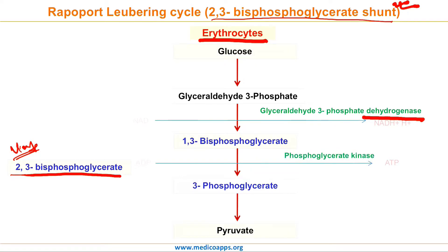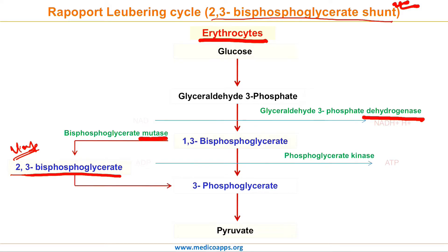There is a pathway wherein 1,3-bisphosphoglycerate first converts itself into 3-phosphoglycerate and then into pyruvate. Now in the shunt, 1,3-bisphosphoglycerate is converted into 2,3-bisphosphoglycerate with the help of the enzyme bisphosphoglycerate mutase. The amount of this shunt is controlled by the requirement of 2,3-bisphosphoglycerate by the RBCs. Ultimately, all the 2,3-bisphosphoglycerate is converted into 3-phosphoglycerate with the help of 2,3-bisphosphoglycerate phosphatase, and finally converted into pyruvate.